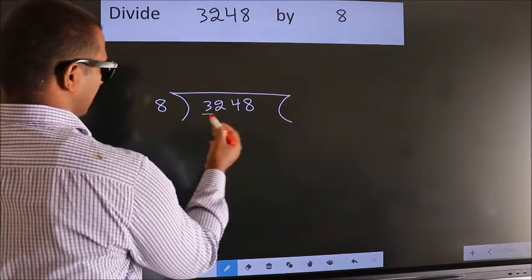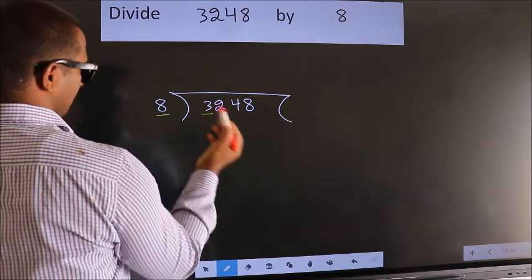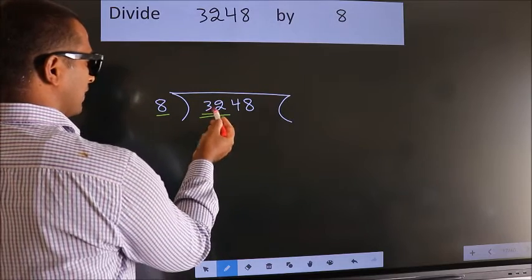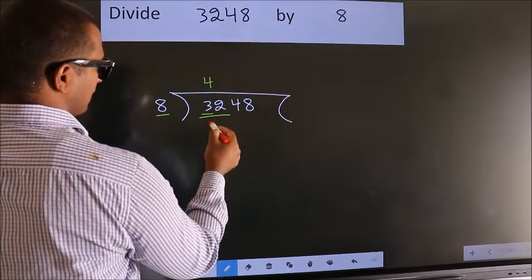Here we have 3. Here 8. 3 smaller than 8. So, we should take 2 numbers, 32. When do we get 32? In 8 table. 8 fours 32.